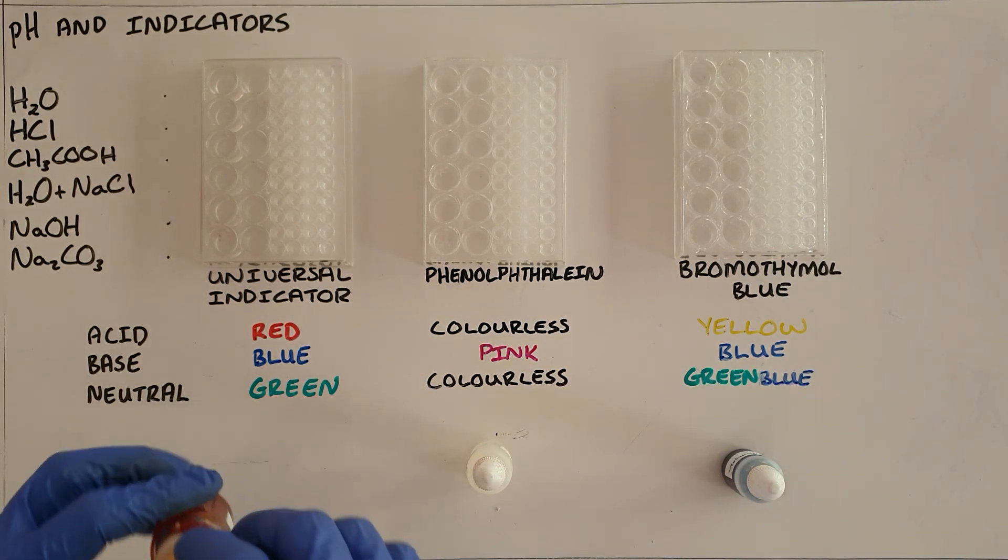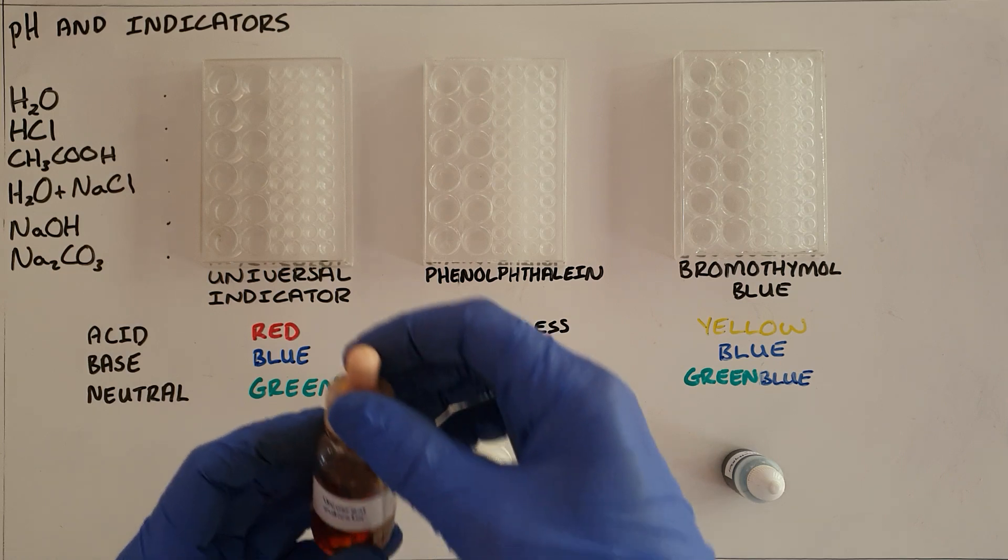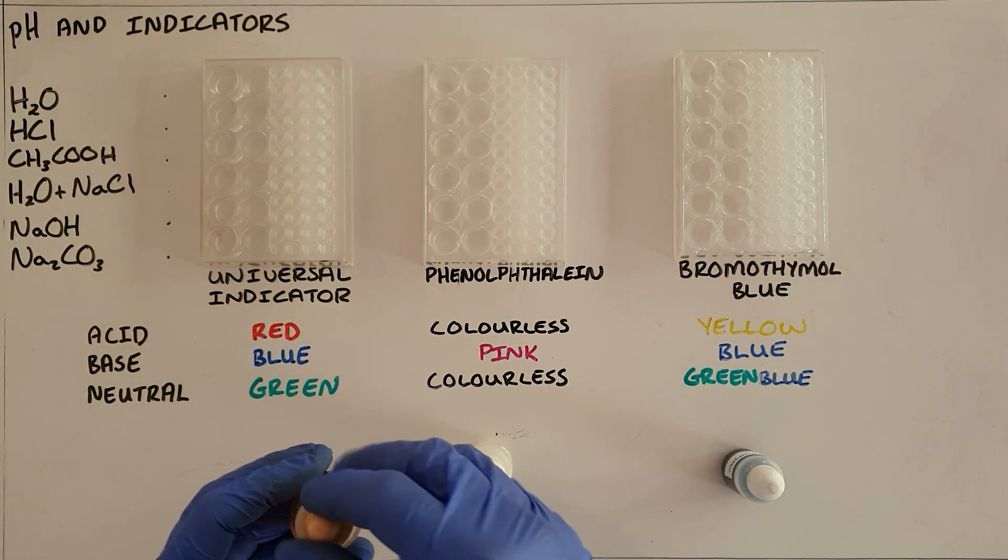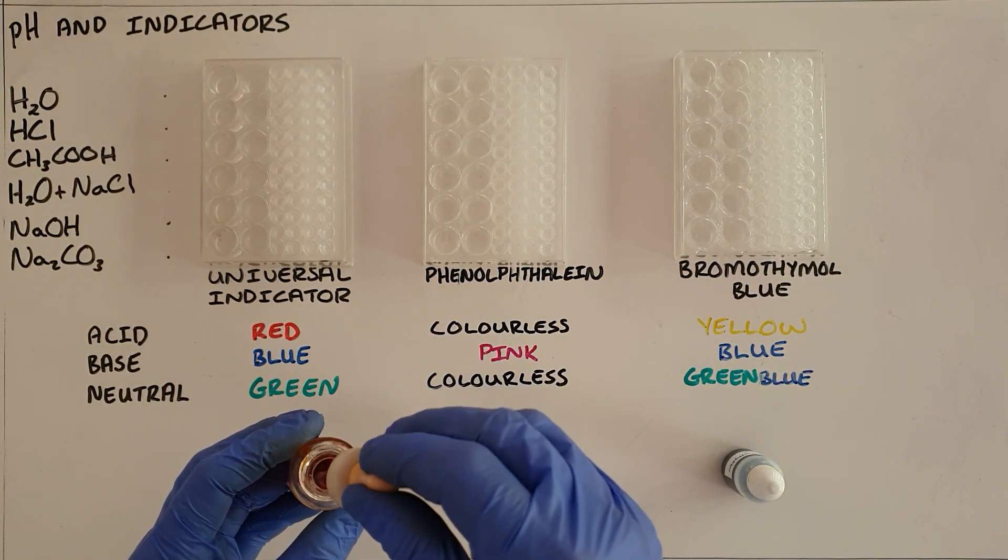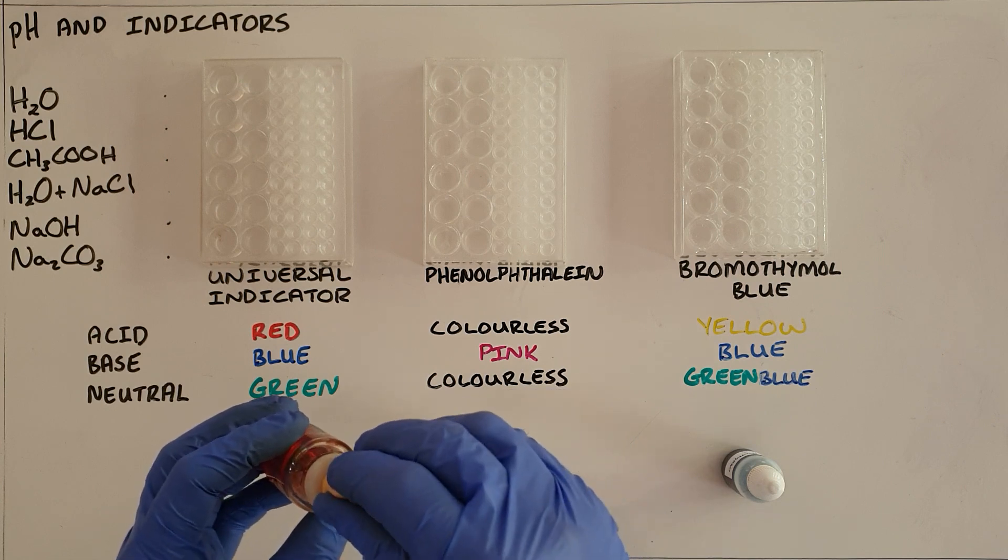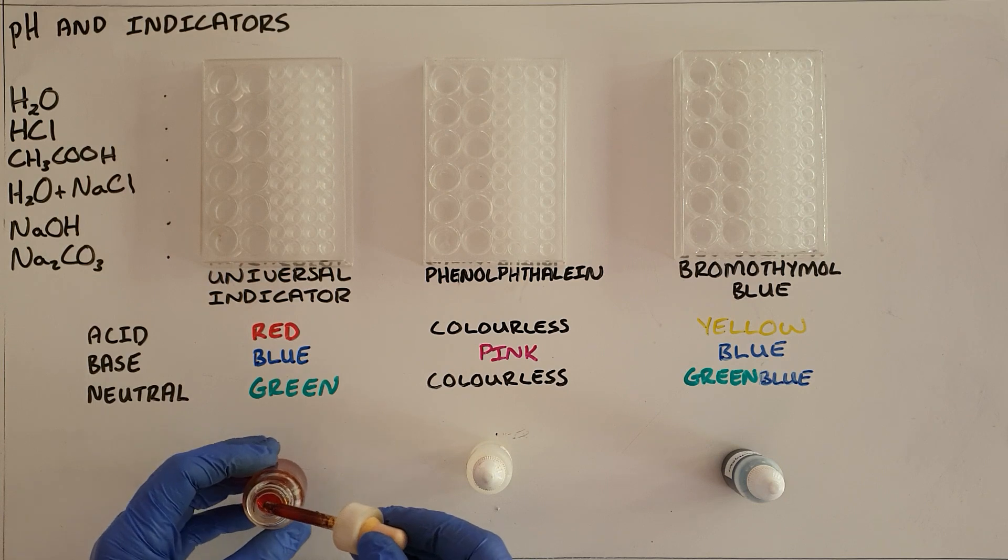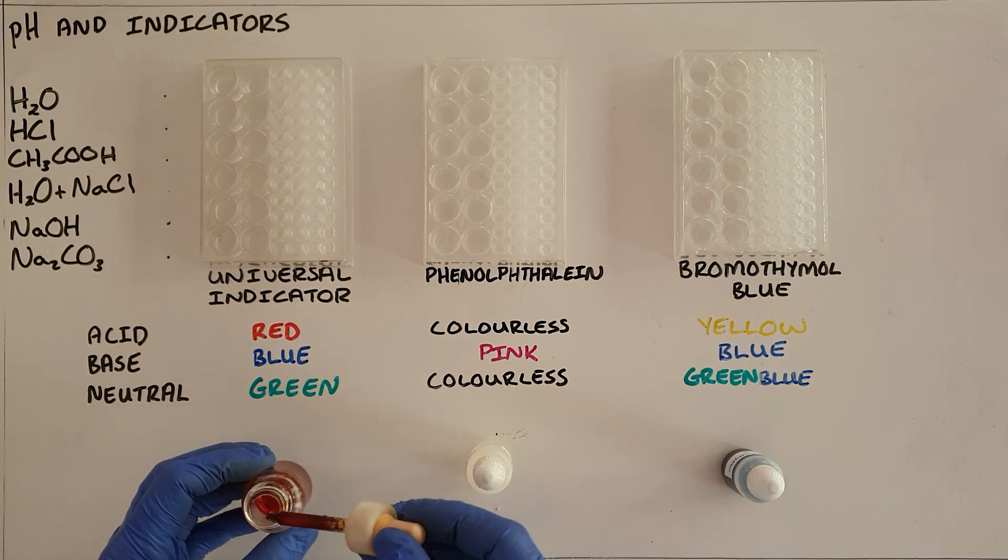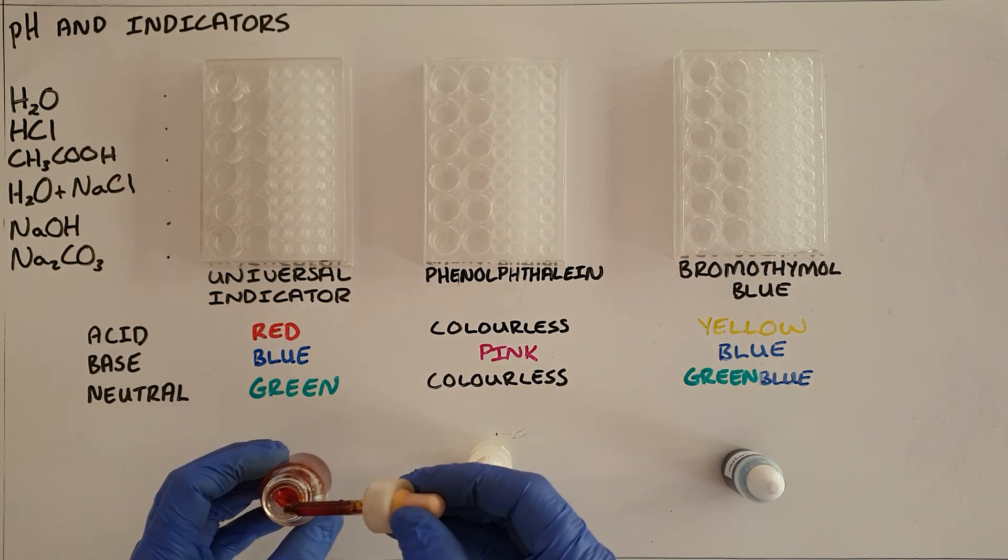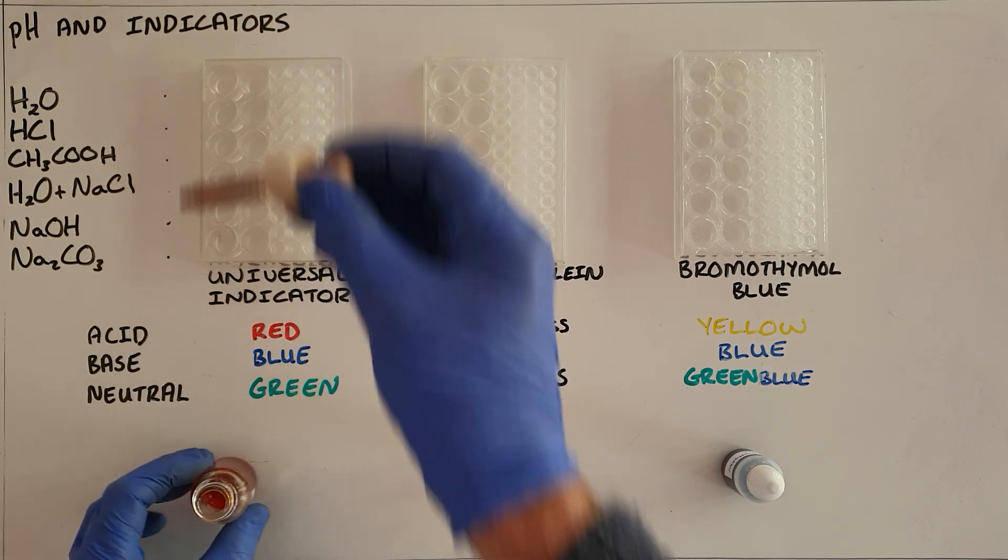So what I'm going to start by doing here is I'm going to use the universal indicator to measure or to give us an indication of how acidic or basic each of these substances is. We know that the universal indicator will turn red in an acid, blue in a base and green in a neutral substance.